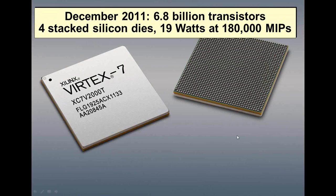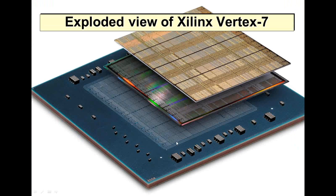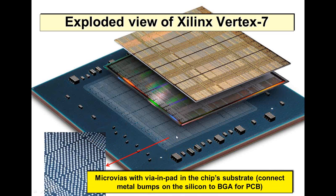Here's an example of a Vertex 7 field programmable gate array — it's a 3D stacked wafer, one of the first. You can see the pattern of pads underneath. These are all microvias — the board substrate is a microviar substrate. The ball pitch is very small, so aligning the chip must be quite precise. Look at all the connections that go through onto the printed circuit board.